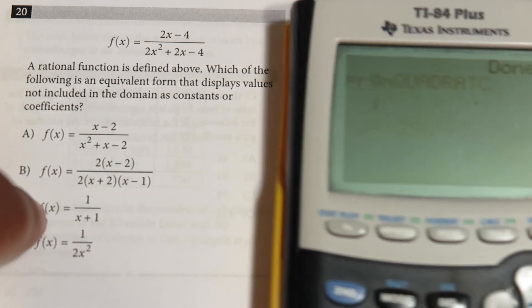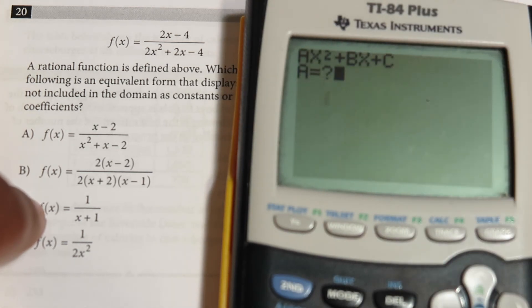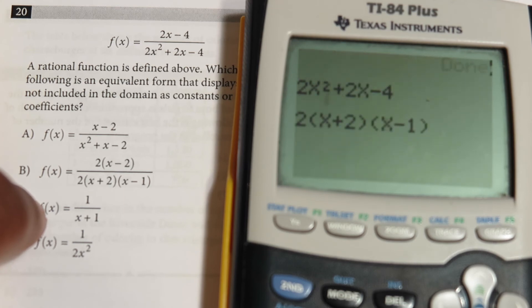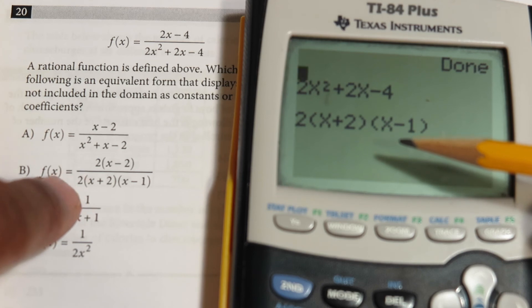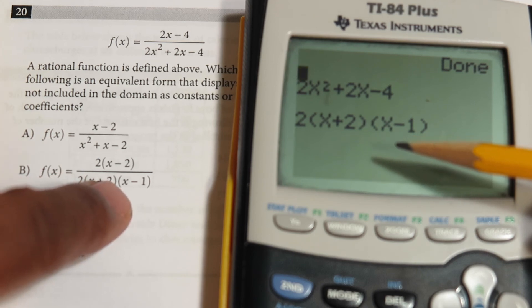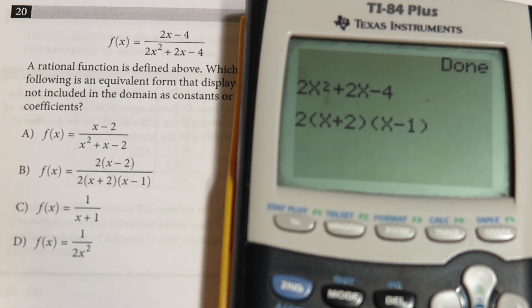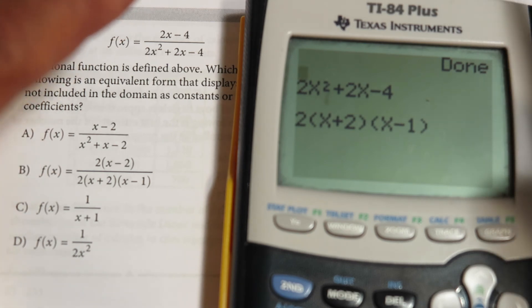I'm going to press enter again and enter it in standard form. I'm going to enter the denominator: 2 for a, then 2 for b, then negative 4 for c. Then I'm going to factor it because I want to know where the factors or roots are. The factored form would be 2(x + 2)(x - 1), and that's what they wanted, so the choice here would be B.